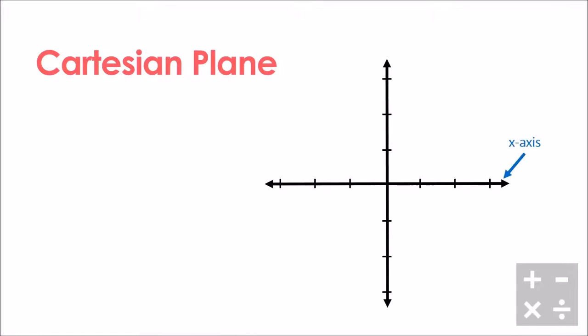We have what's called an x-axis, shown here with the blue arrow, and what is called a y-axis, shown in yellow. You'll notice the x-axis runs from left to right, and the y-axis runs from top to bottom. In the very middle where they meet, we call the origin, and we'll talk about its coordinates a little later.